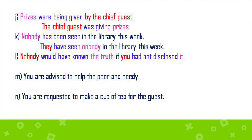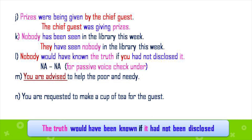The truth would have been known if you had not disclosed it. 'Nobody' is the subject for the main clause and 'you' is the subject for the conditional clause. 'Would have known' is the verb. The passive form 'would have been known' and 'had been disclosed' converts to active: 'Nobody would have known the truth if you had not disclosed it.' This is the actual answer.